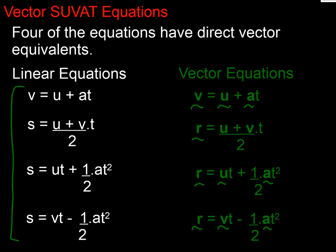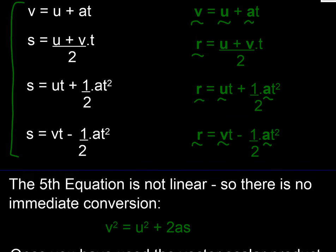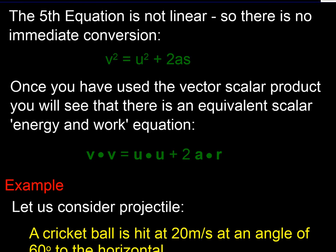But what about the fifth one? Well, this isn't linear, is it? V squared equals U squared plus 2AS. Well, actually, it's an energy equation. Once you've looked at vector scalar products in other modules, we can see that V squared, the magnitude of V squared, is V dot V, which must equal U dot U plus 2 lots of A dot R. If you think about that, those are energy. That's an energy equation, an energy work equation. So we can come back to that another day.